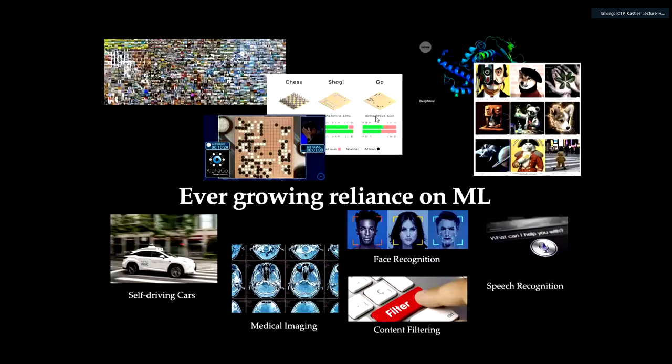In the past decade, we have been witnessing a lot of amazing progress in machine learning, starting from image classification to playing complex games, to doing protein structure prediction, generating images, and more recently with large language models. And not only that, we also see this ever-growing reliance on machine learning in all sorts of modern-day applications — from self-driving cars to medical imaging, face recognition, speech recognition, and the list goes on.